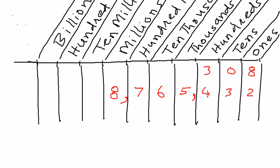So that is how we can read the numbers out. We are always going to place the numbers from the right and then move to the left. Let's take another example.